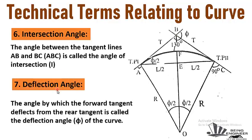The seventh term is deflection angle. The angle by which the forward tangent deflects from the rear tangent is called the deflection angle of the curve, and it is represented by phi. As you can see here, this is the exterior angle at the intersection point of the two tangents — the angle by which the forward tangent is deflecting from the rear tangent — and it is represented by phi.